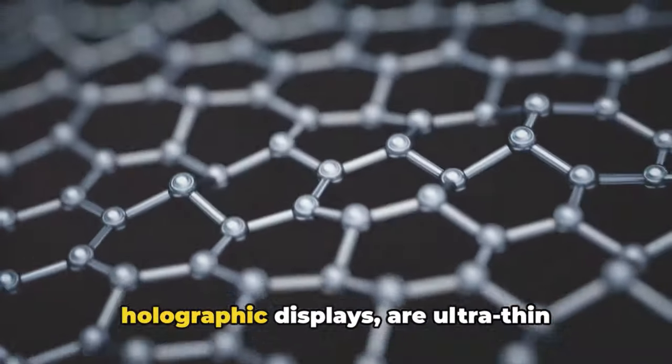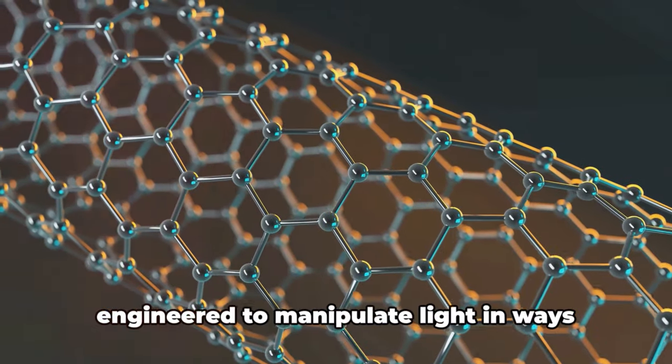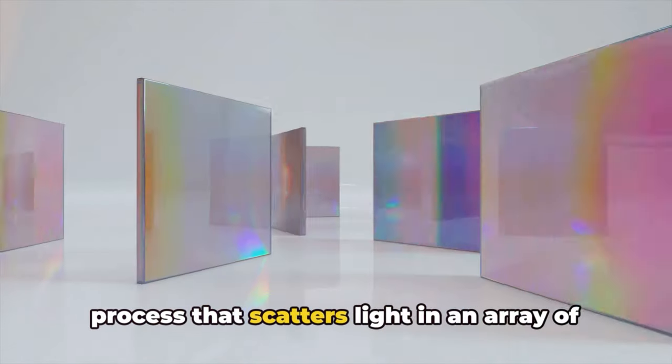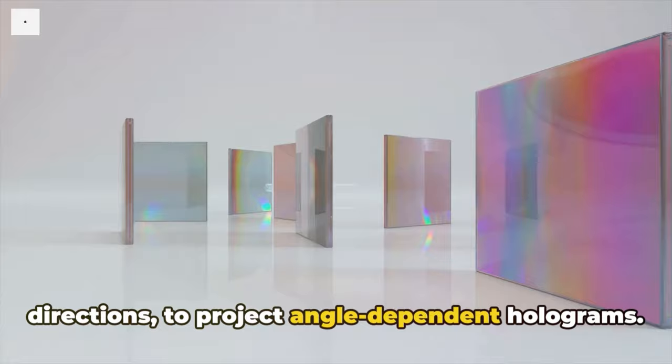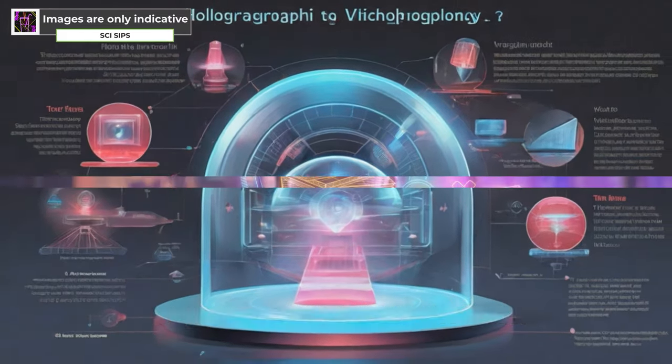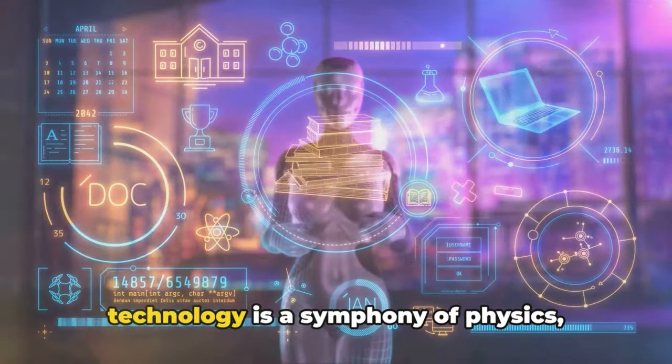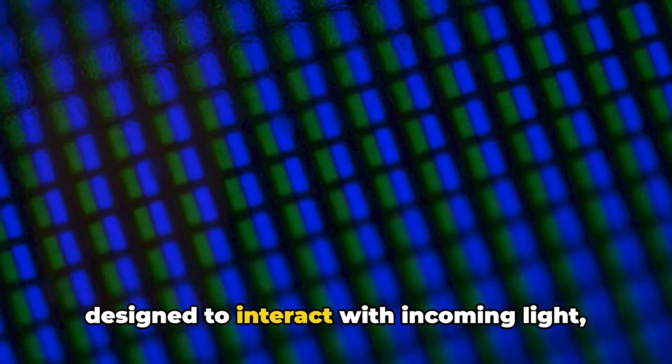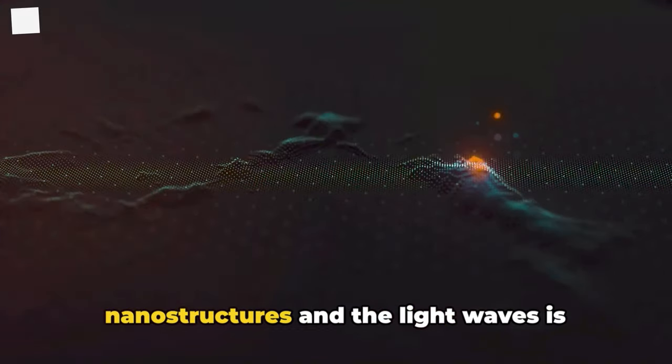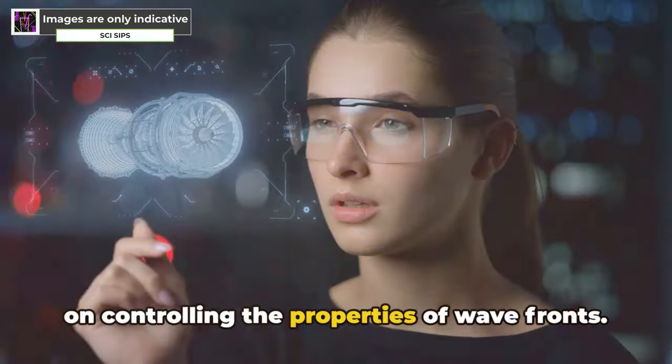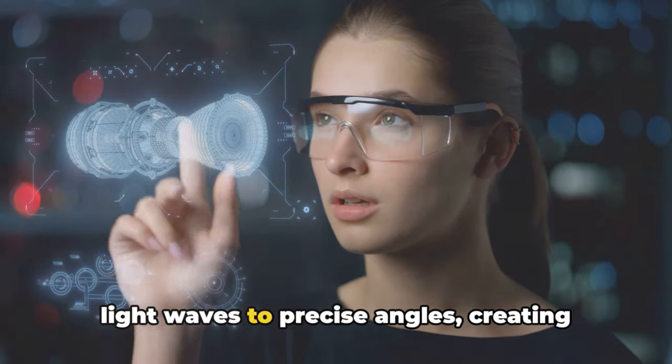Metasurfaces, the unsung heroes of holographic displays, are ultra-thin layers of artificial nanostructures engineered to manipulate light in ways that ordinary surfaces cannot. They control light dispersion, the process that scatters light in an array of directions to project angle-dependent holograms. This technology is the magic key that unlocks the door to immersive virtual and augmented reality experiences. The science behind metasurfaces display technology is a symphony of physics, nanotechnology, and optics. The nanostructures on the metasurfaces are designed to interact with incoming light, altering its direction, intensity, and even its phase. The interaction between the nanostructures and the light waves is governed by the principles of wavefront engineering, a field of study that focuses on controlling the properties of wavefronts. The metasurfaces are tailored to bend light waves to precise angles, creating distinctive three-dimensional holographic images that vary based on the observer's viewpoint.